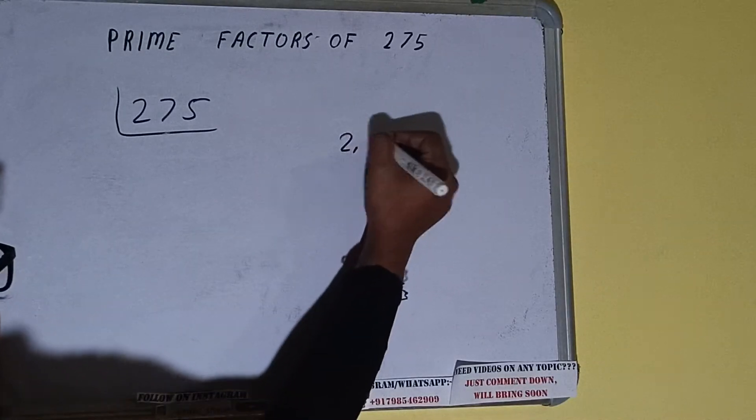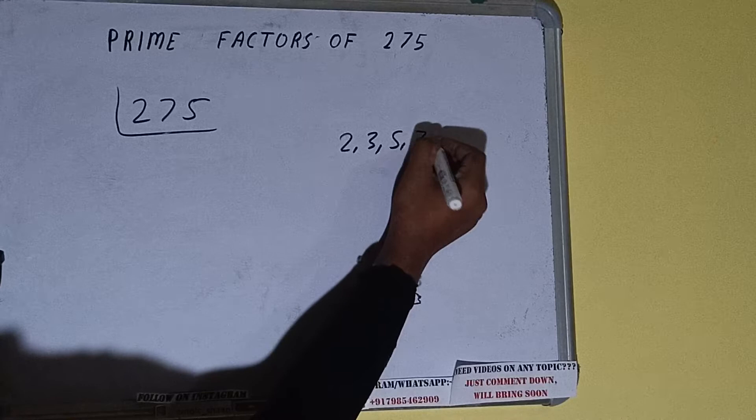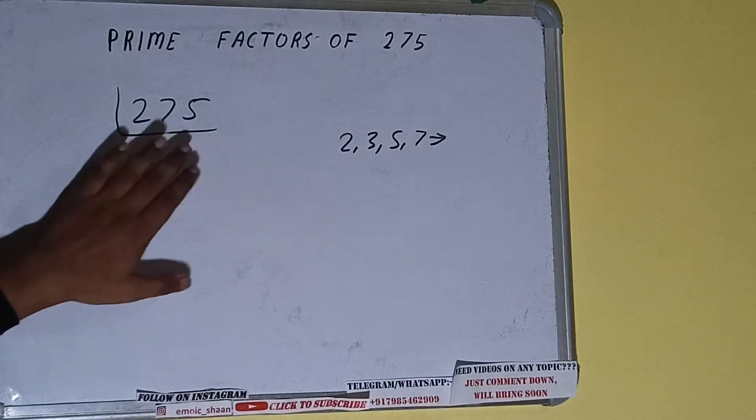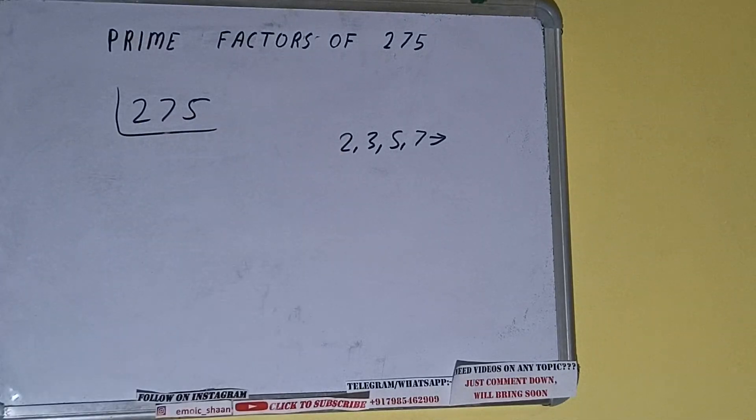Like 2, 3, 5, 7, and so on. All right, so we'll check with the lowest prime number we have, that is 2. Is the number 275 divisible by 2? It is not, because the number is odd.